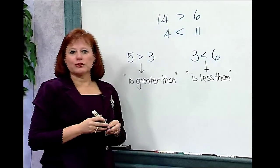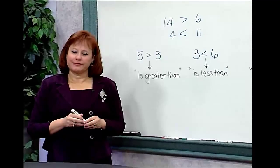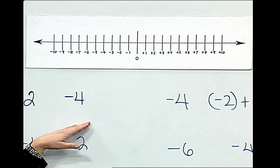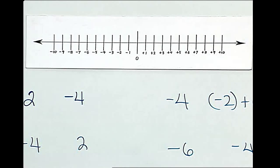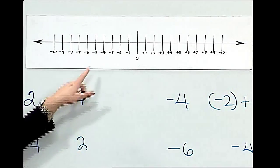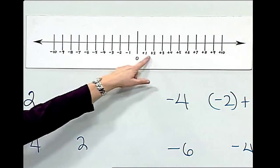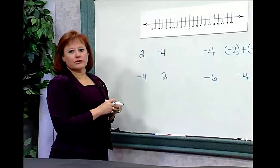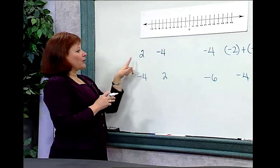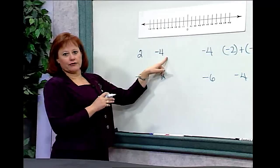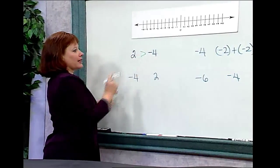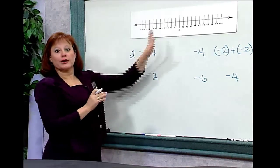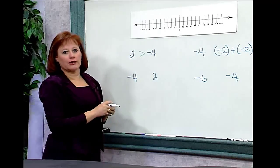We're going to compare some signed numbers using a number line to assist us. We'll compare the numbers 2 and negative 4 to start with. We look on the number line trying to locate these numbers, and we see negative 4 and 2. Since 2 lies to the right of negative 4, we know it's the larger number. And we know 2 is greater than negative 4. So we'll use our greater than sign. 2 is greater than negative 4 because it's to the right of negative 4 on the number line.